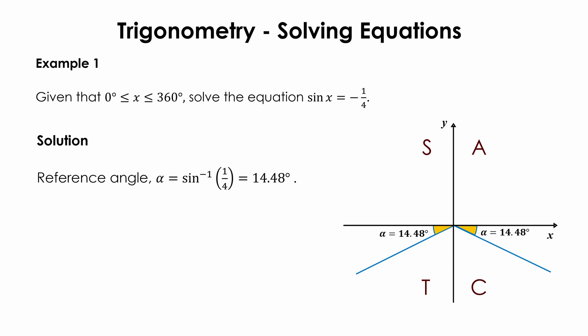In quadrants 3 and 4, draw a line such that it makes an acute angle of 14.48 degrees with the x-axis as shown. In quadrant 3, the angle theta equals 180 degrees plus 14.48 degrees, which equals 194.5 degrees. In quadrant 4, the angle theta equals 360 degrees minus 14.48 degrees, which equals 345.5 degrees.